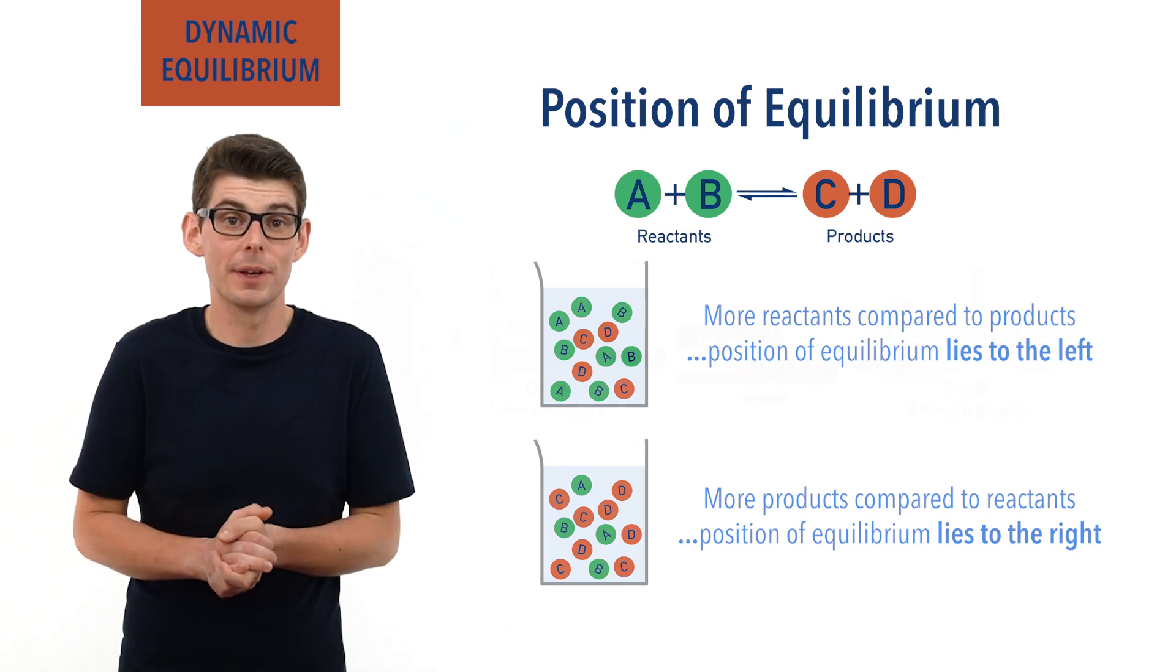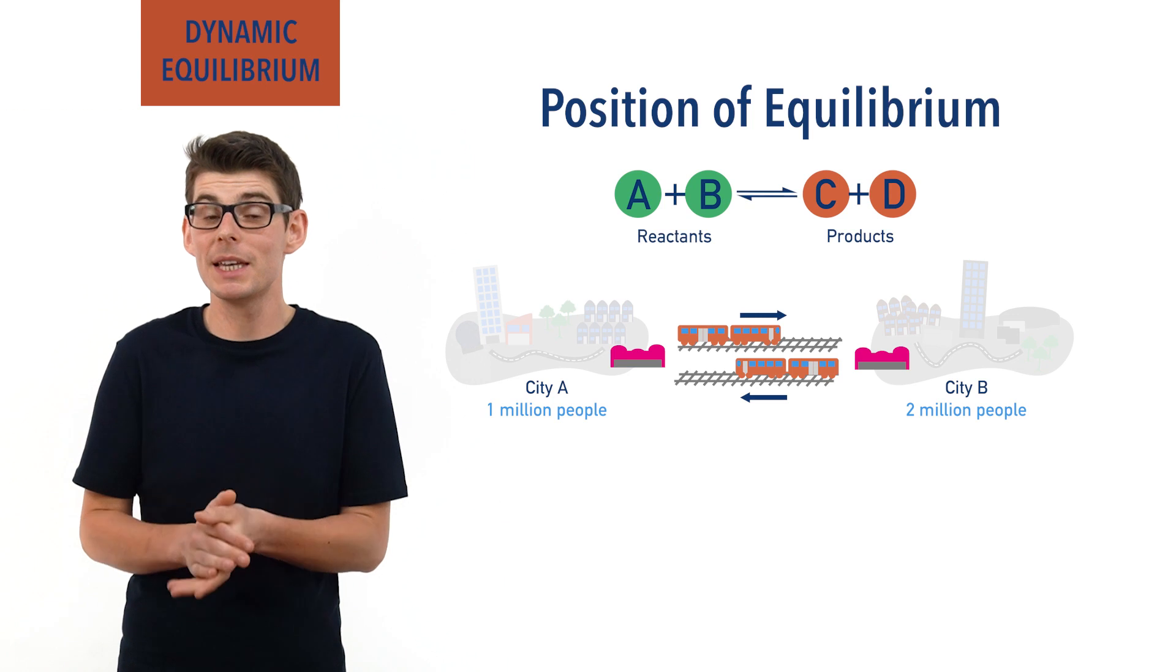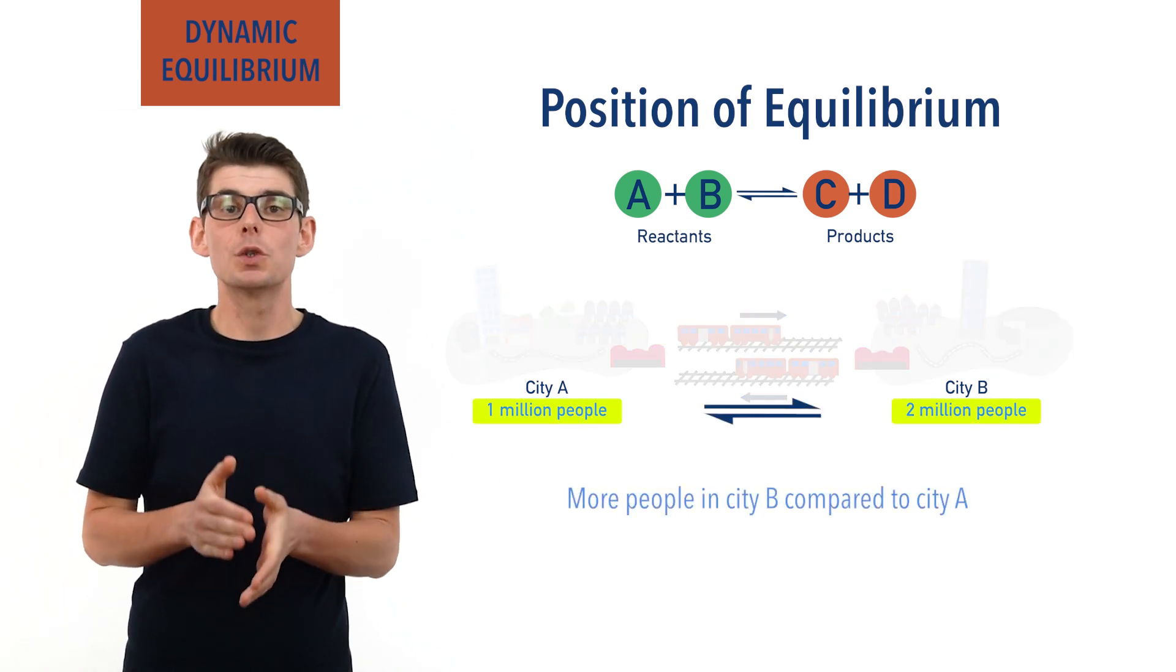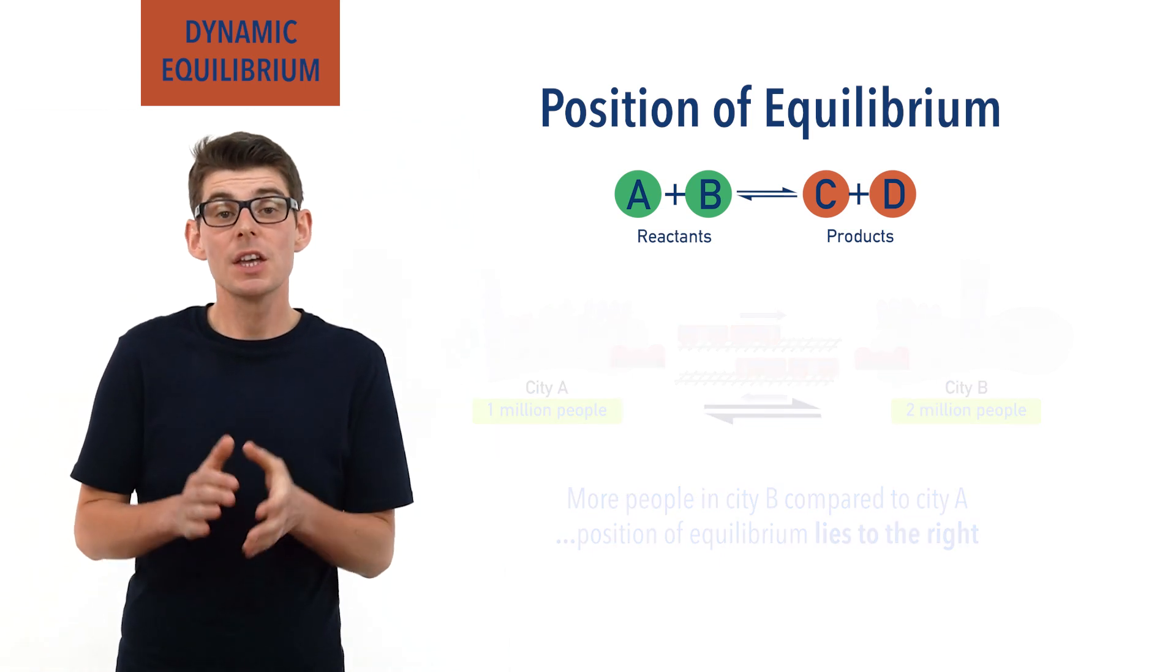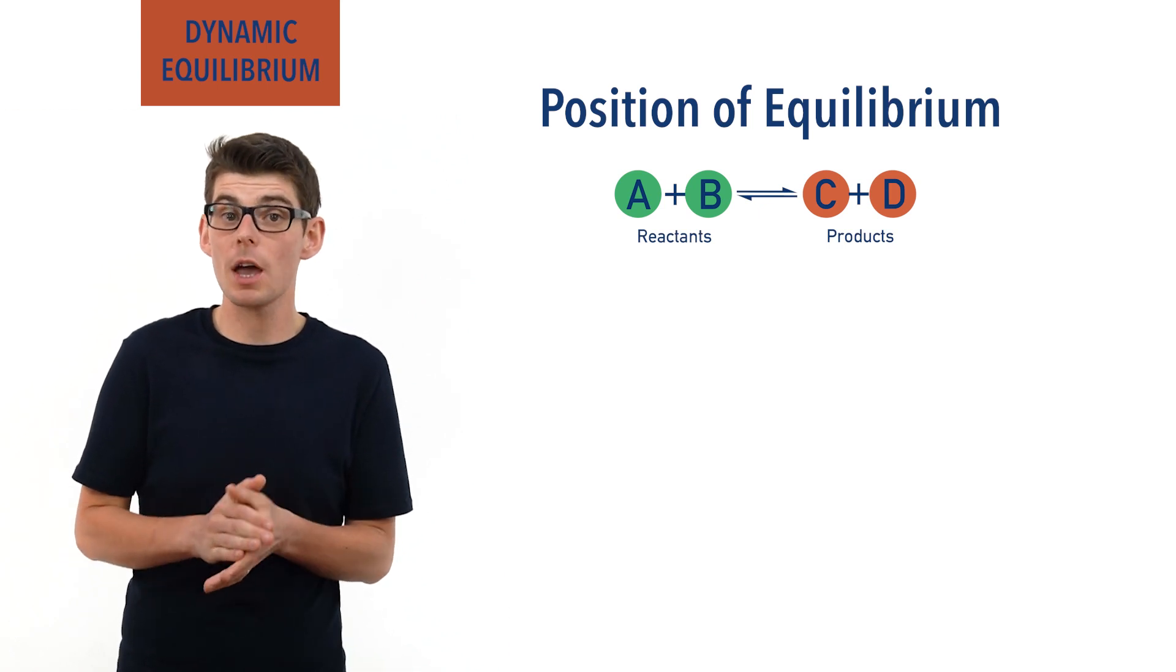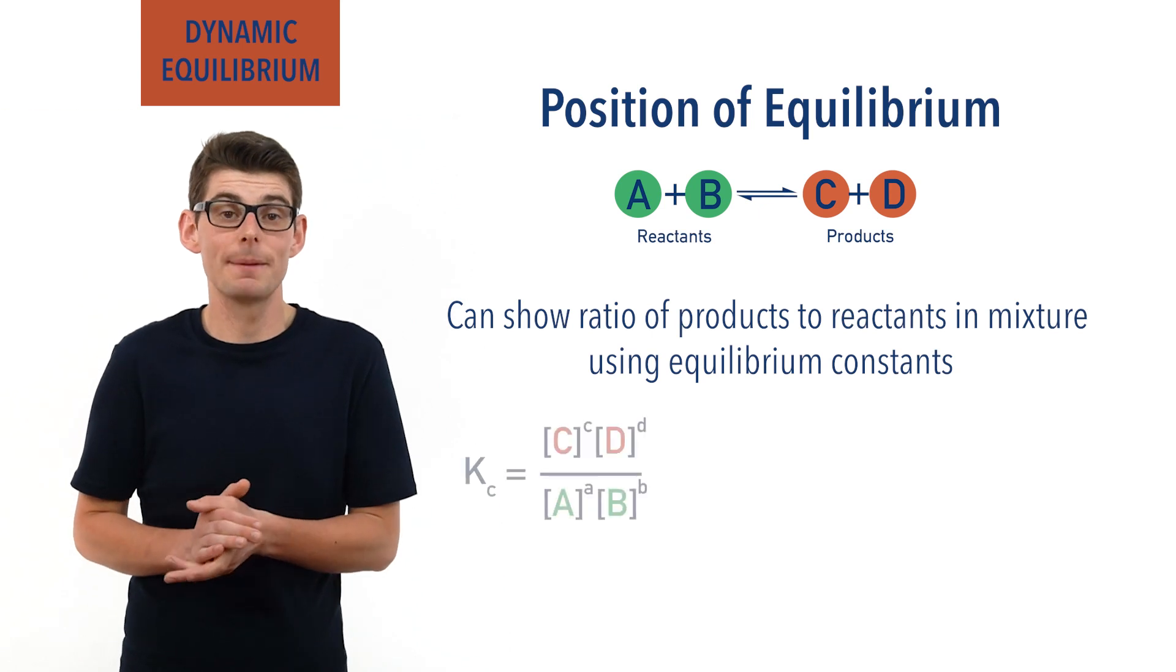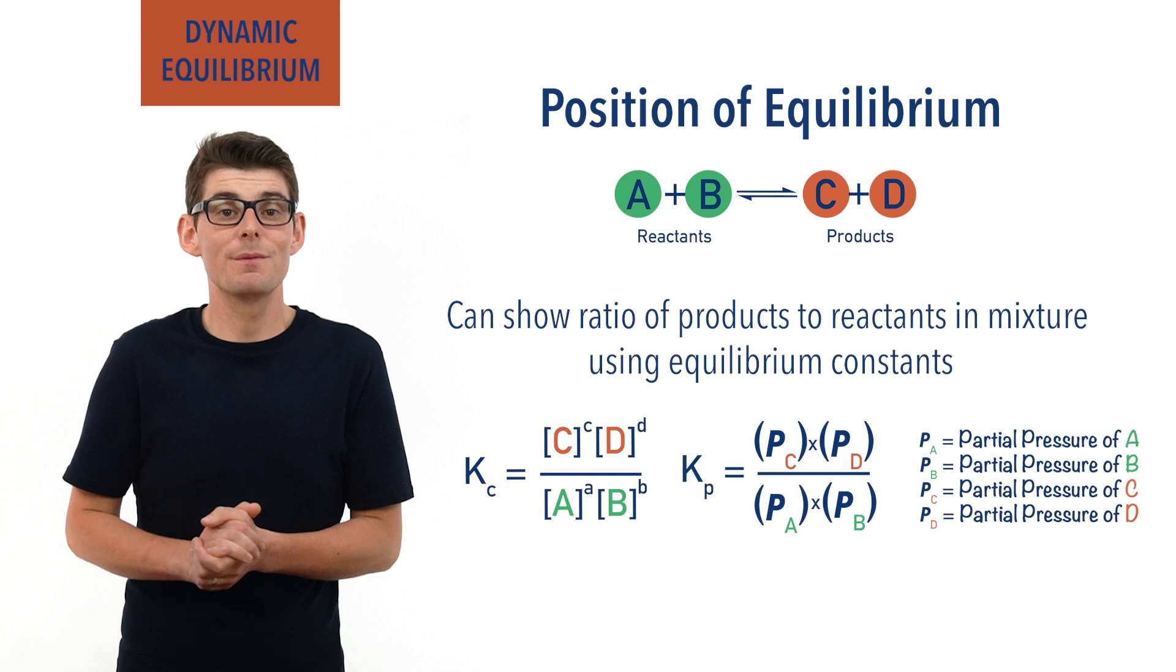To use our cities example here, it's a bit like saying that because more people are in city B at equilibrium, the position of equilibrium lies to the right. Exact ratios of products to reactants can be found using concentrations, and positions of equilibrium can be described using equilibrium constants, such as Kc and Kp. These have been covered in separate videos, check the links in the description below.